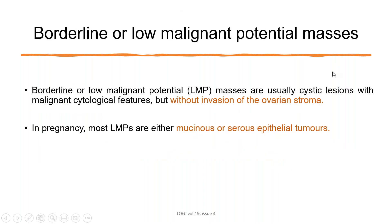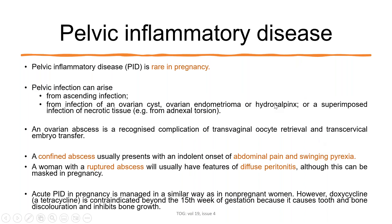Borderline or low malignant potential masses are usually cystic lesions with malignant cytological changes but without invasion into the ovarian stroma. In pregnancy, they can be mucinous or serous epithelial tumors. PID can also cause ovarian masses but is very rare in pregnancy. Pelvic infection can arise from ascending infection, infection of an ovarian cyst, ovarian endometrioma, hydrosalpinx, or superimposed infection of necrotic tissue.